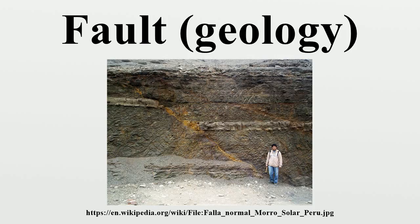Faults may be reactivated at a later time with movement in the opposite direction to the original movement, so a normal fault may therefore become a reverse fault and vice versa. Thrust faults form nappes and klippes in large thrust belts. Subduction zones are a special class of thrusts that form the largest faults on Earth and give rise to the largest earthquakes.